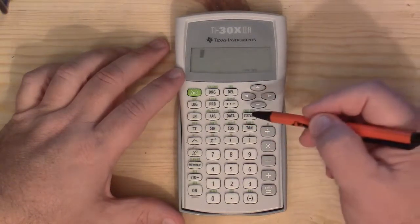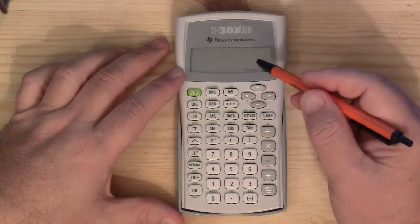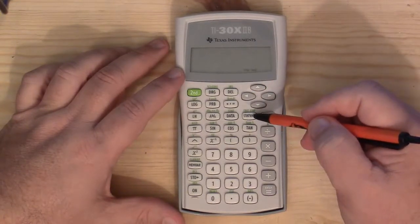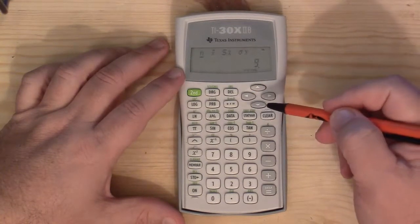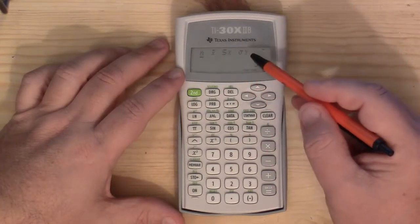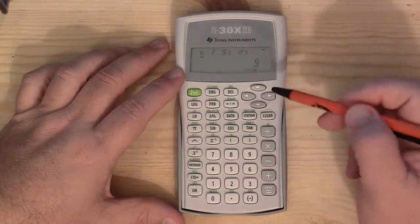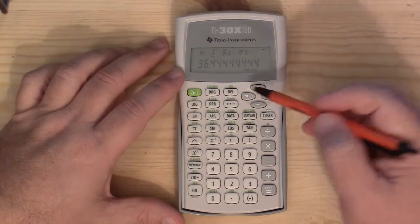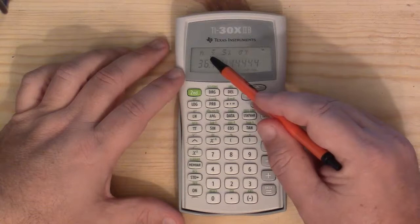Then I'm going to push the data button to exit out of there. Now this button that says stat bar, if I push it then across the top says n, x bar, sx, little o with a flip x, that's sigma x. If I right arrow over and have x bar underlined,